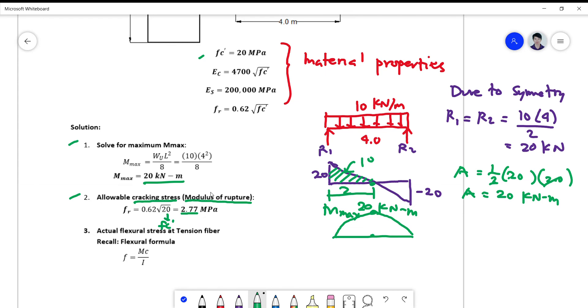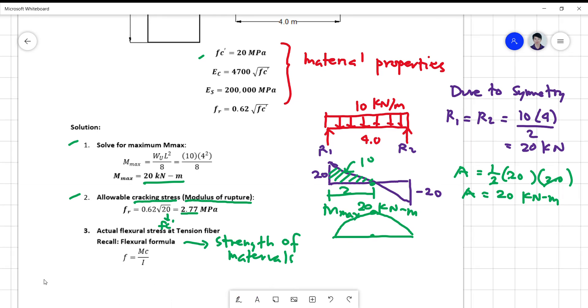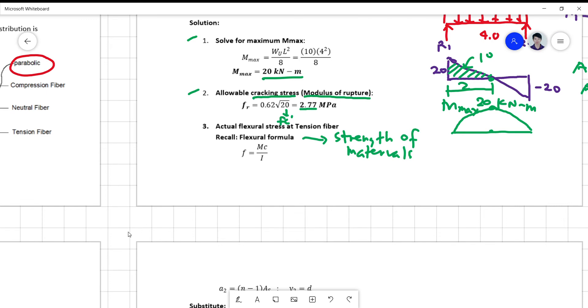So this is the amount of stress that the concrete can hold before it cracks. The modulus of rupture simply gives you the maximum stress that the concrete can withstand before it cracks. And we have to compare this to the actual flexural stress at the tension fiber. And we know that in your strength of materials, your flexural formula is simply f equals mc over i, where m is the maximum moment, c is the distance of the fiber from the neutral axis, and i is the moment of inertia.